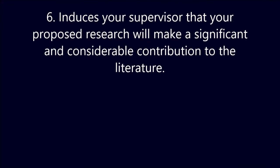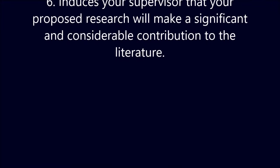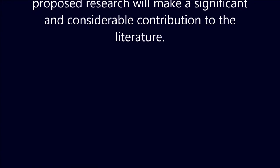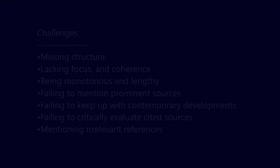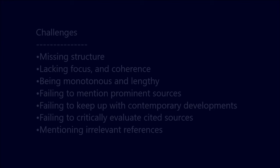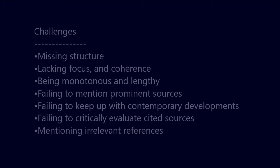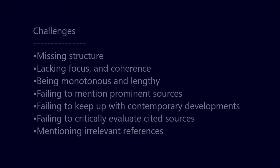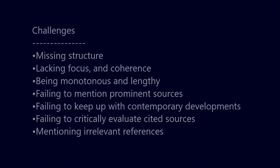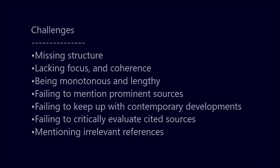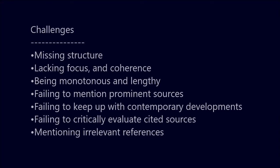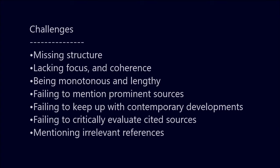Most students' literature reviews face difficulties from the following complications: missing organization and structure, lacking attention focus and coherence, being monotonous and lengthy, failing to mention prominent sources, failing to keep up with contemporary developments, failing to critically evaluate cited sources, and mentioning inappropriate or irrelevant or unimportant references.